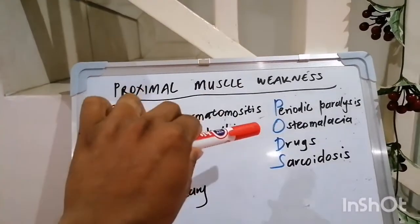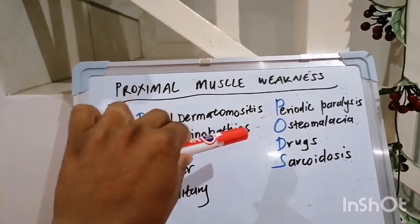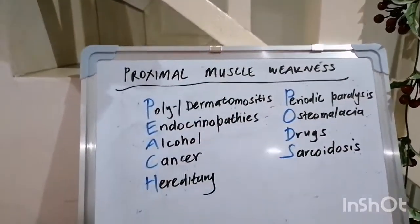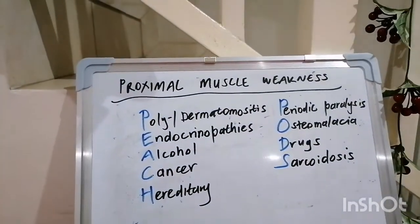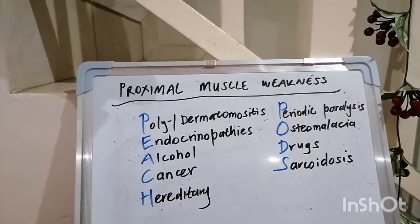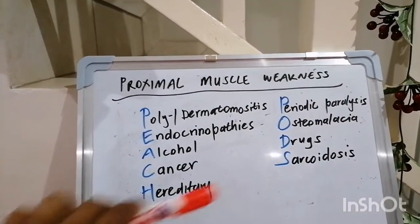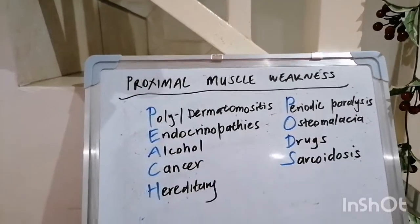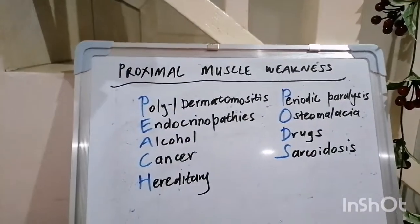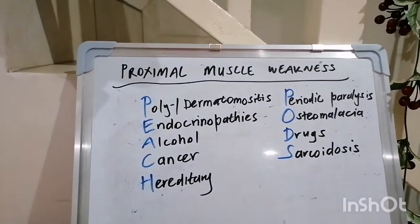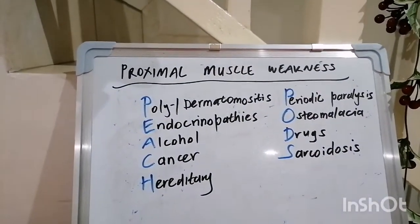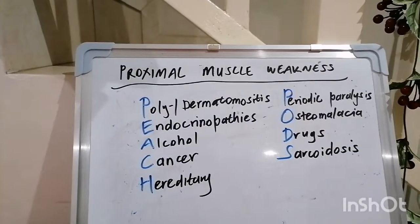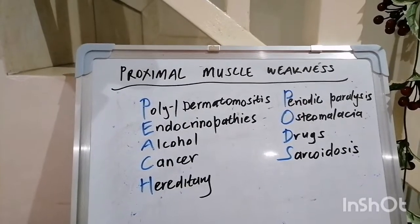O is for osteomalacia. D is for drugs, and the main culprits to think about there are statins and steroids. And S stands for sarcoidosis, so be aware of bilateral hilar lymphadenopathy and erythema nodosum and your uveoparotid syndrome.